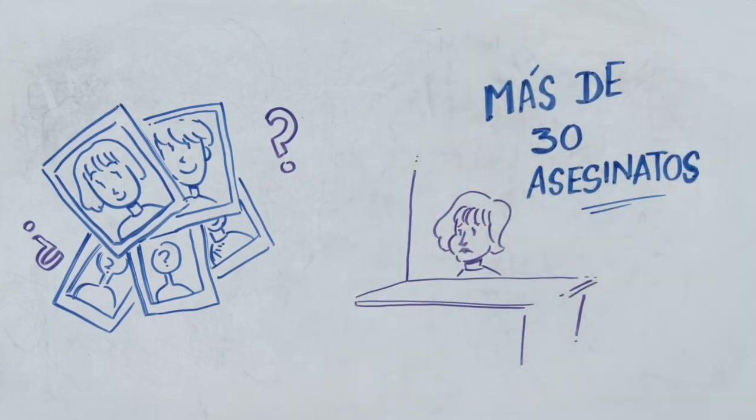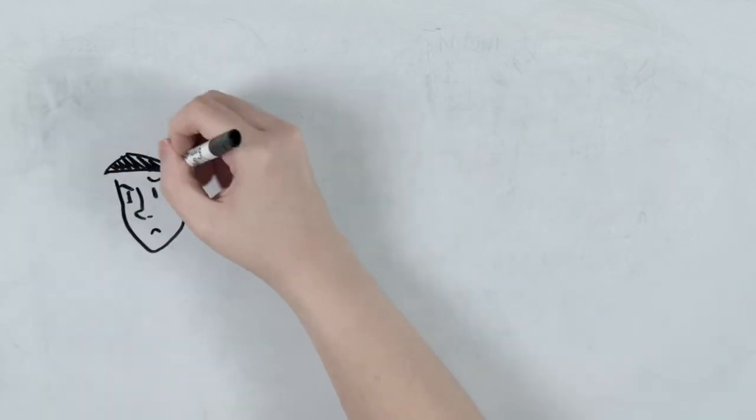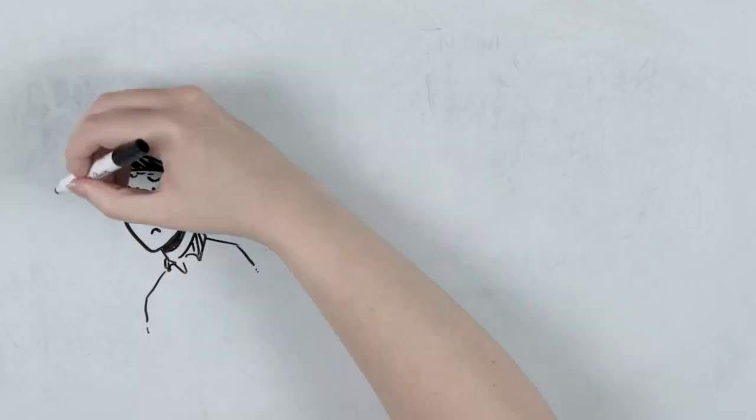At the trial Natalia recognized photographs of more than 30 women who had disappeared. The police can't figure out how they could commit so many crimes without even being suspicious.